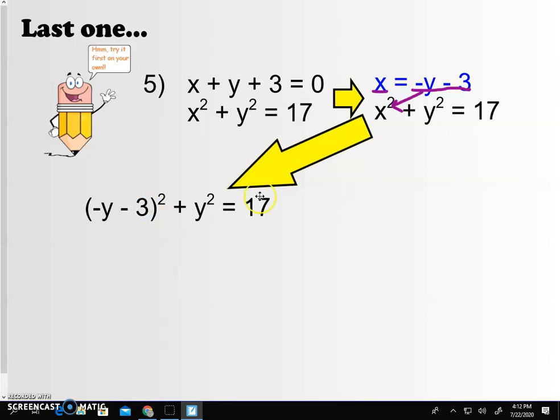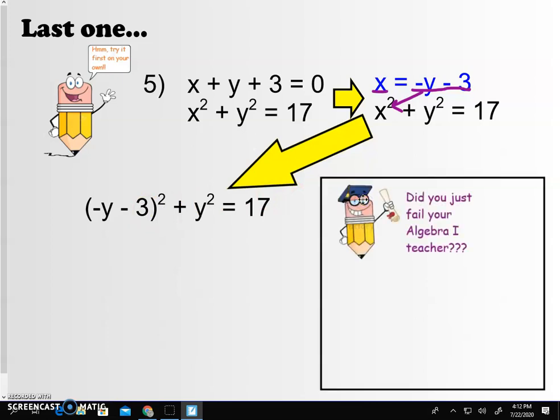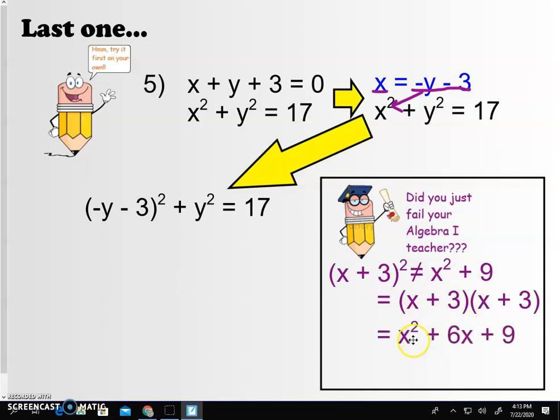All right, we have some beef. Here's my question. Did you just fail your Algebra 1 teacher? Let's talk about expanding this because one of the biggest mistakes smart kids make is they rush through expanding this. If I asked you to expand x plus 3 squared, a lot of kids would claim that that's x squared plus 9. It is not. And yes, I am going to call you a name. And that name is a bonehead. You know x plus 3 squared is x plus 3 times x plus 3. It's x squared plus 6x plus 9. Don't be a bonehead. Don't be a bonehead. Do the right expansion.